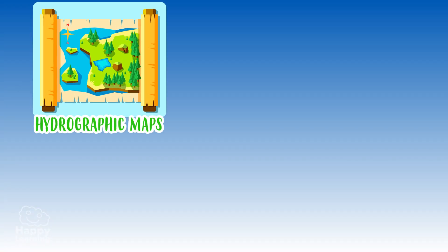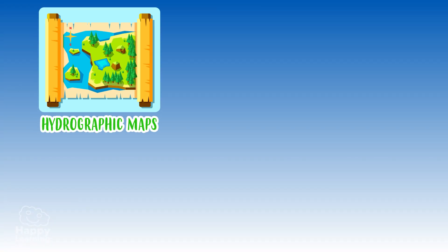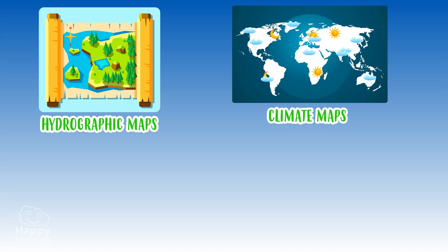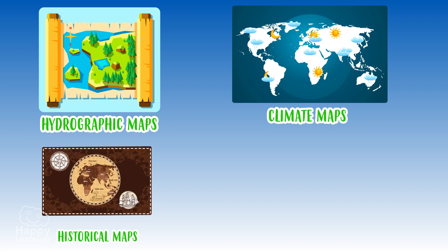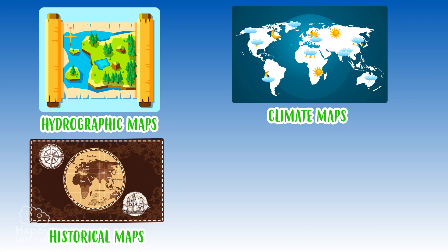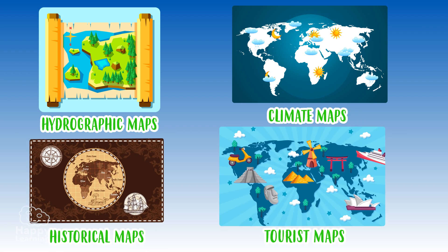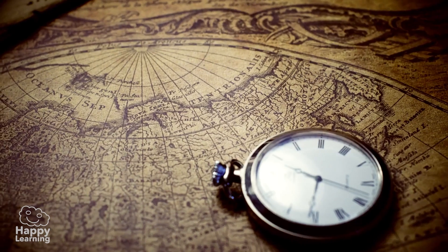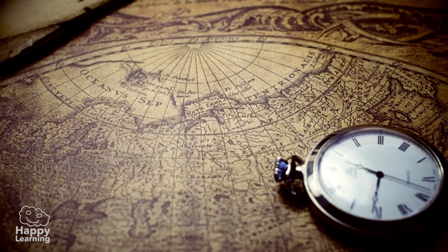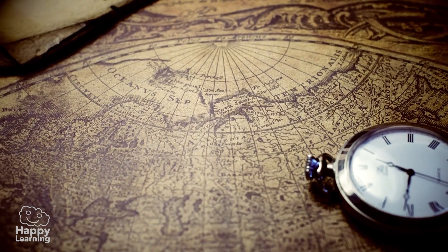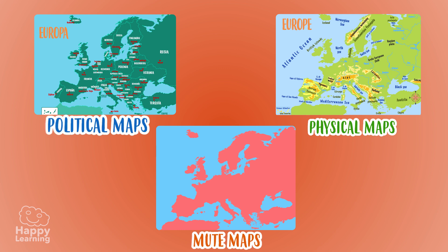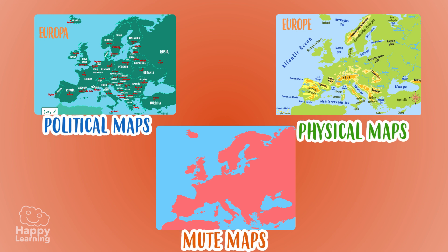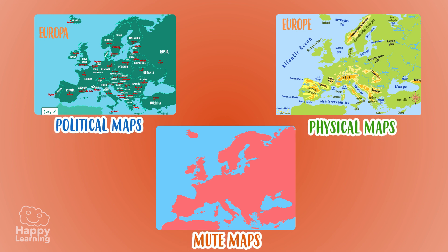Hydrographic maps, climate maps, historical maps, tourist maps. Some of them are true works of art. Here you can see a super old one. Today we're going to learn about three types of maps.